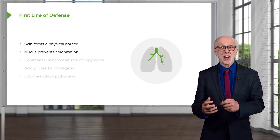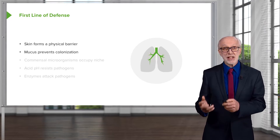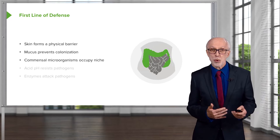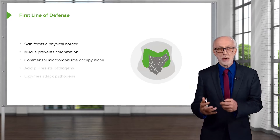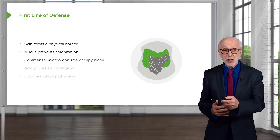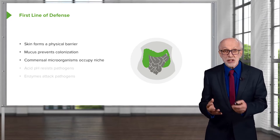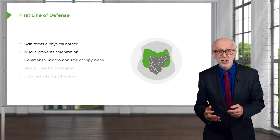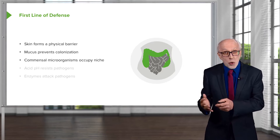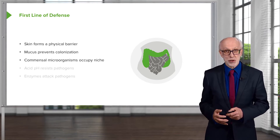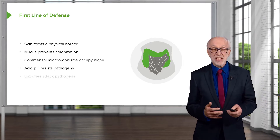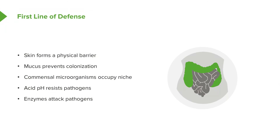We also have mucus, which can prevent colonization by microorganisms in places such as the lung. Let's not forget that not all microorganisms are harmful. We have commensal microorganisms that occupy a niche in the body that could otherwise be taken up by pathogens, and these commensal microorganisms will utilize nutrients that would otherwise be available to pathogens. Some of them are very beneficial to us. The acid pH in the stomach can also help resist pathogens.